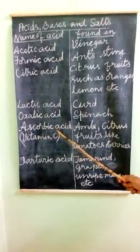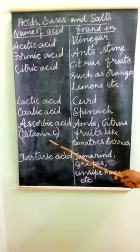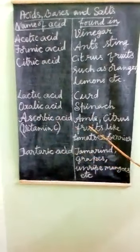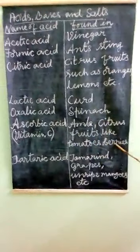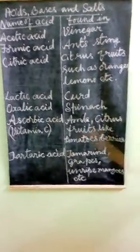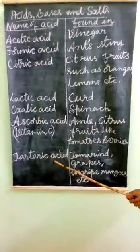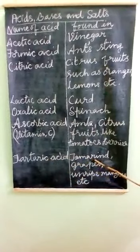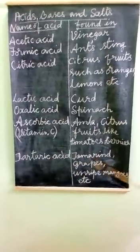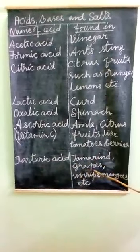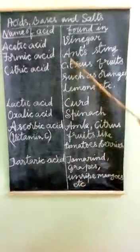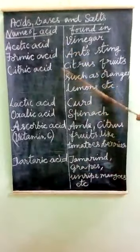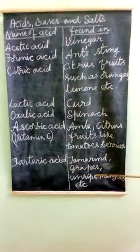Ascorbic acid, also known as Vitamin C, is present in amla, citrus fruits like tomatoes, and berries. Tartaric acid is present in tamarind, grapes, and unripe mangoes. These are certain acids present in common substances.